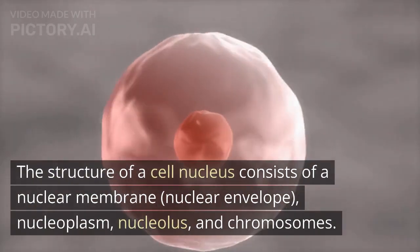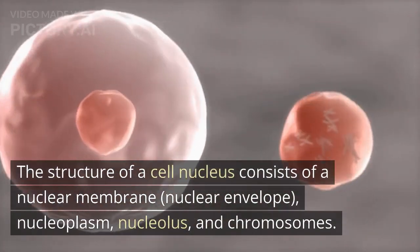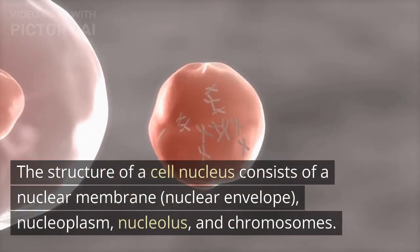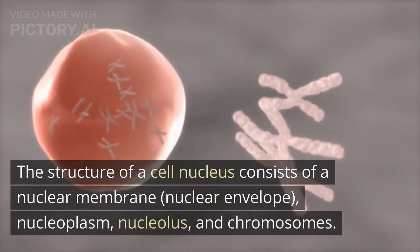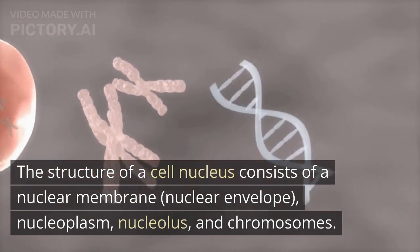The structure of a cell nucleus consists of a nuclear membrane, nuclear envelope, nucleoplasm, nucleolus, and chromosomes.